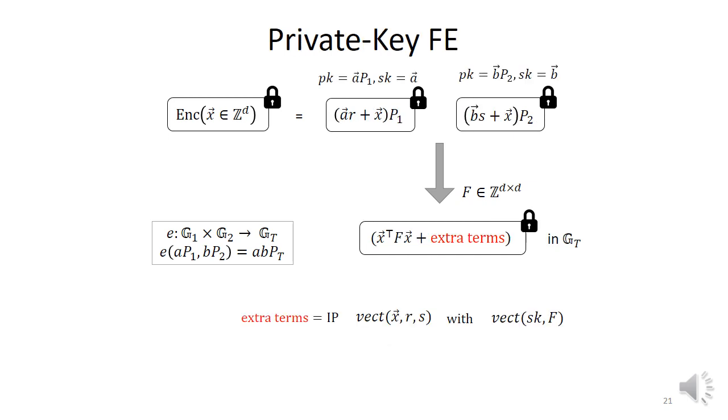First, I'm going to give you a private key FE. This is not really what we aim for, but that's a good stepping stone. So how does it look like? As I said, the first thing that comes to mind is using Elgamal, so we will do that. So you want to Elgamal encrypt X. So what is the public key? It's just a vector of group elements, and the secret key is the exponents. Sample a random R and this is your encryption. And do the same thing in G2 for a different public key B and different randomness S.